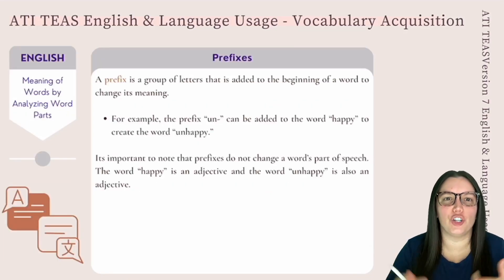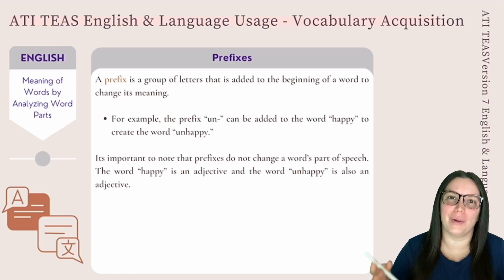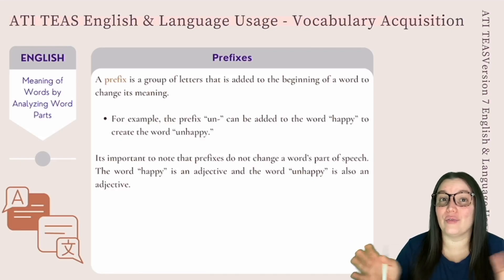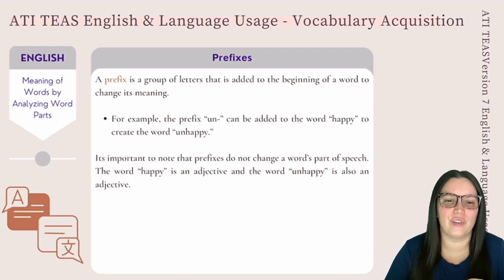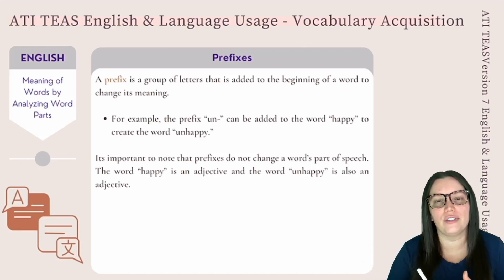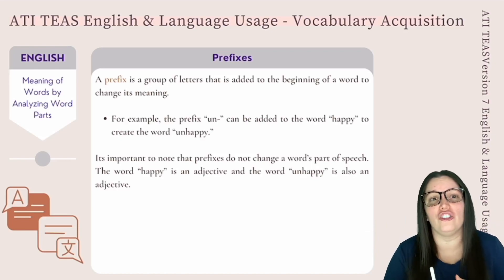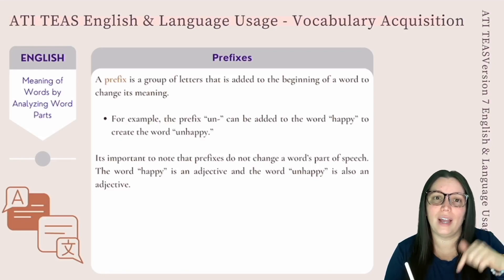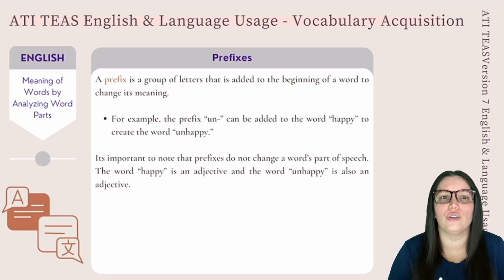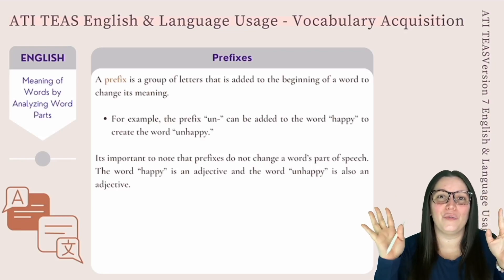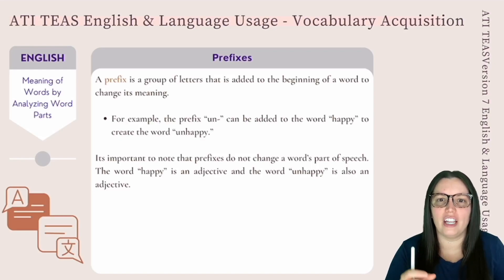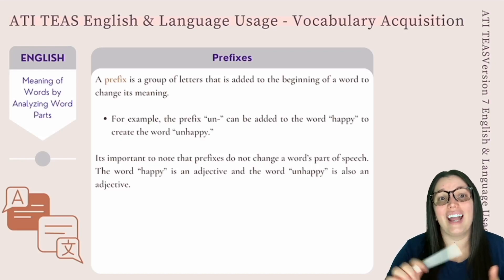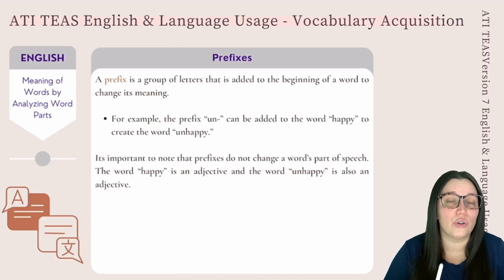The favorite part of the ATI's is determining the meaning of words by analyzing word parts. If you don't understand a word, you look it up and add it to your vocabulary. We're going to look at prefixes, suffixes, and affixes. A prefix is a group of letters added to the beginning of a word to change its meaning. For example, the prefix "un-" can be added to the word "happy" to create "unhappy." It's important to note that prefixes do not change a word's part of speech — "happy" is an adjective, and "unhappy" is also an adjective.